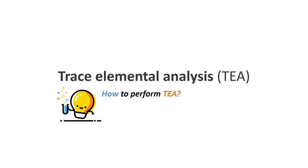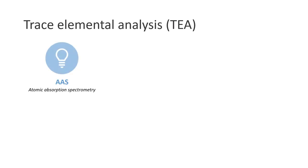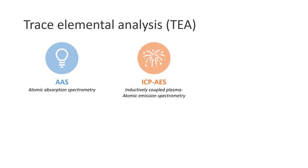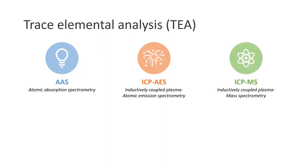So how do we perform trace elemental analysis? What are some of the common industrial practices when it comes to TEA? In general, three major spectrometric methods are used: AAS (atomic absorption spectrometry), ICP-AES (inductively coupled plasma atomic emission spectrometry), and ICP-MS (inductively coupled plasma mass spectrometry).